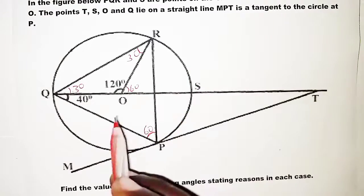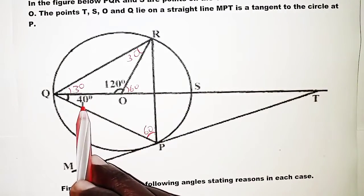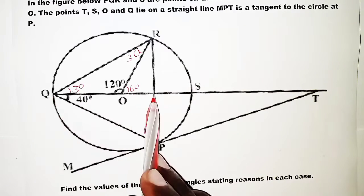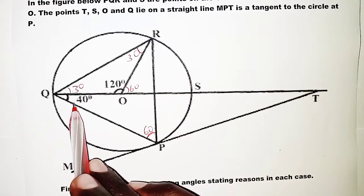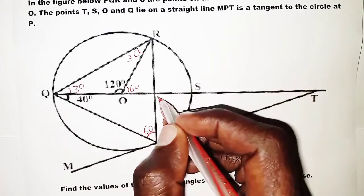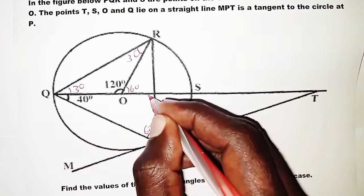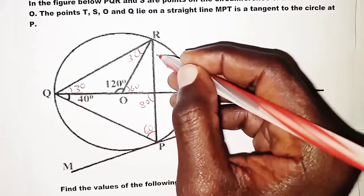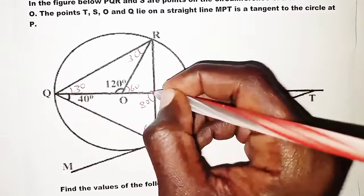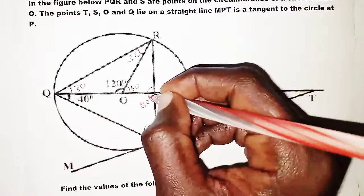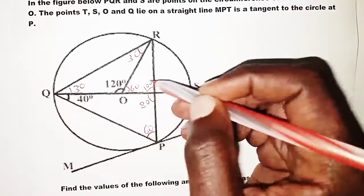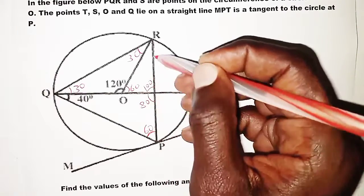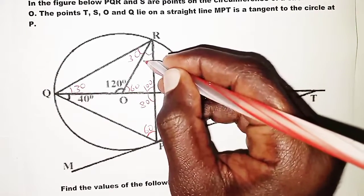If one angle in a triangle is 40° and another is 60°, then by the angle sum of a triangle being 180°, the third angle is 80°. Angles on a straight line add up to 180°, so if one angle is 80°, the adjacent angle on the line is 100°. For another triangle, the angles add up to 180°, giving a missing angle of 20°.